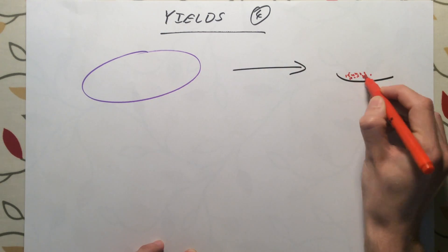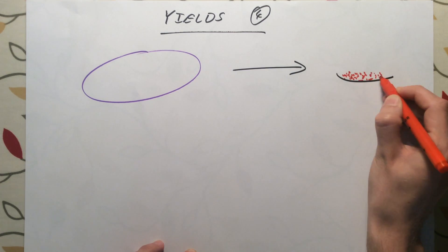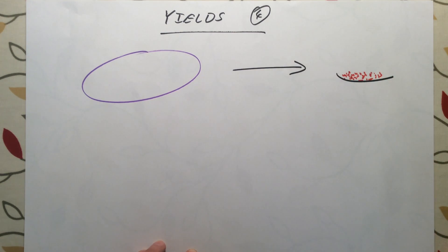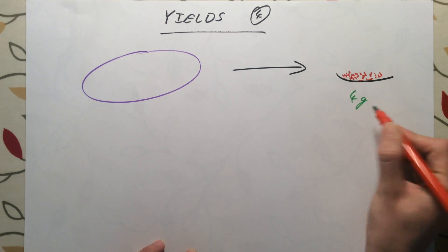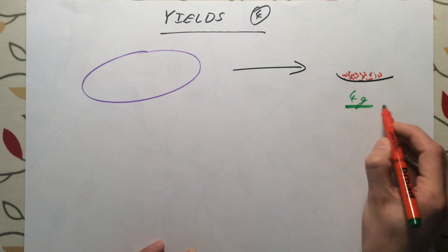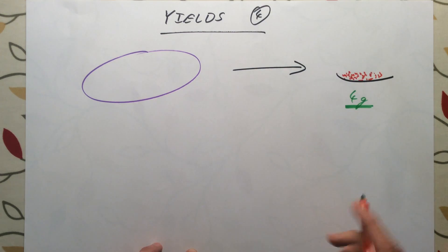Once you've done your reaction and you have filtered and purified and got your product in the pure form, the yield of this reaction is just the number of grams of it you have or the mass of it you have at the end. So in this particular reaction my yield would be four grams of the product I want.